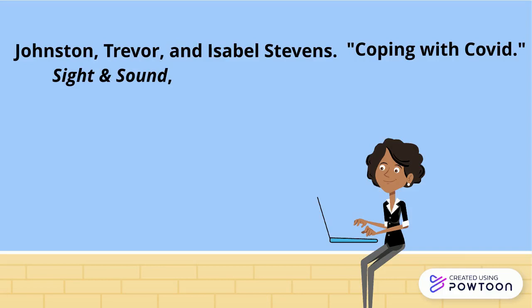If your source has a volume and issue number — common for journal articles — this information goes after the source title. Add vol., followed by the volume number, comma, no., followed by the issue number, and end with a comma.